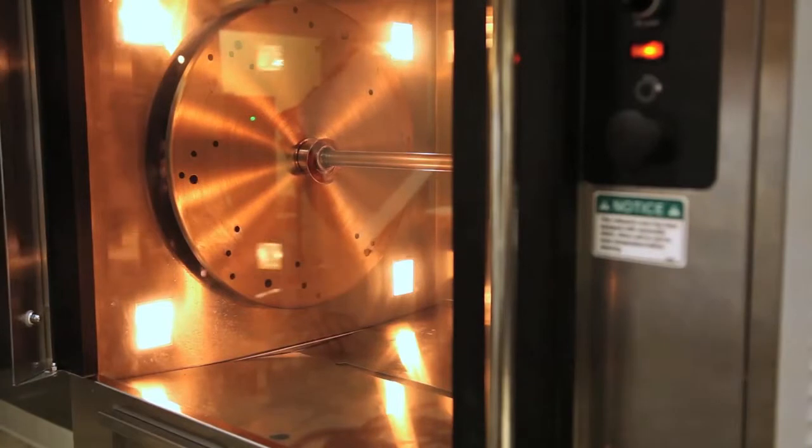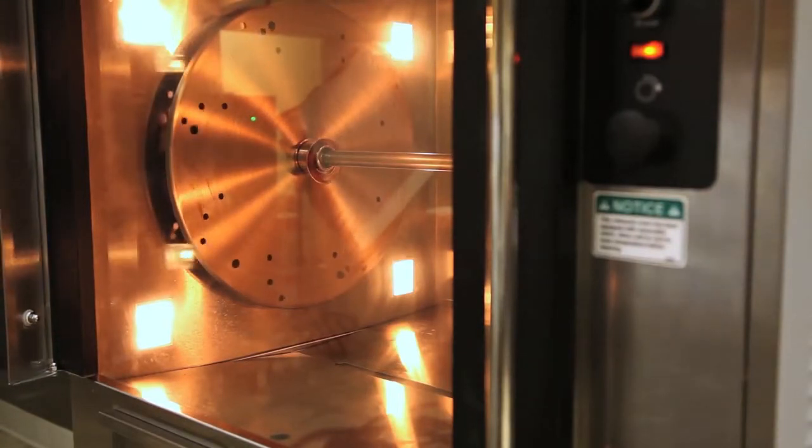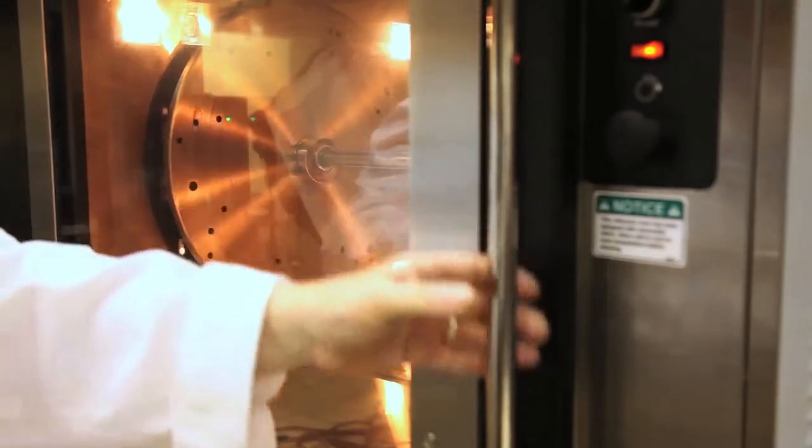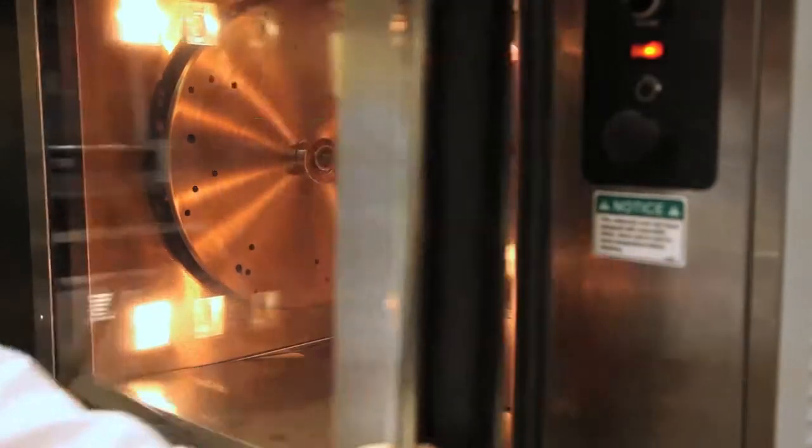Note here we're opening the heat glass, the protective glass, from the surface glass, which will keep the oven cool on the outside and warm on the inside.